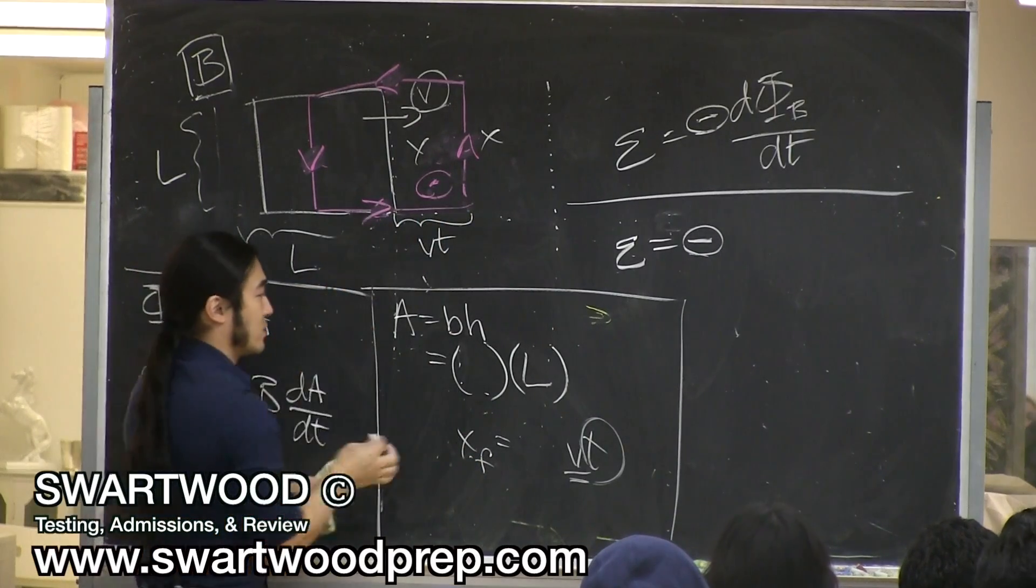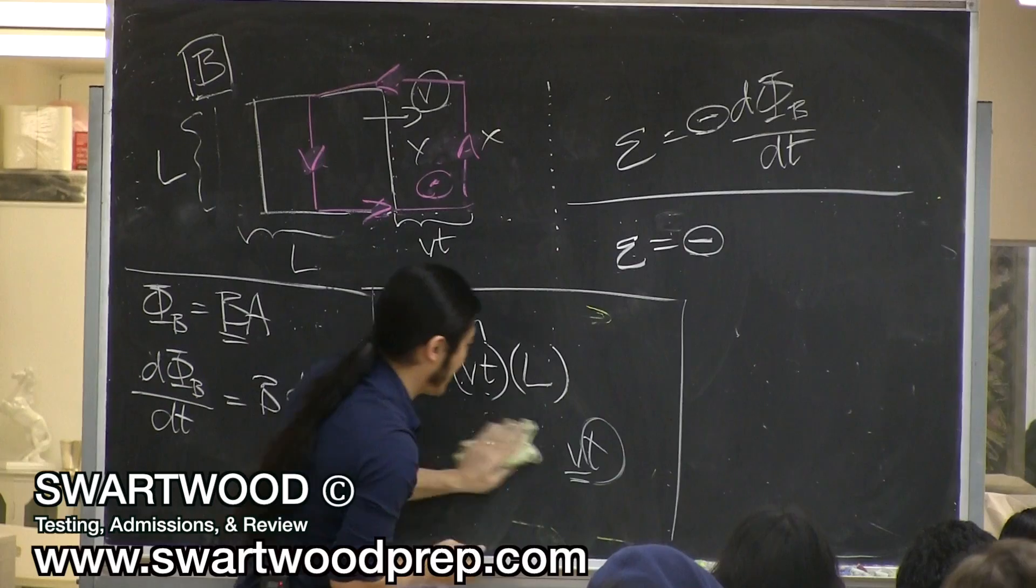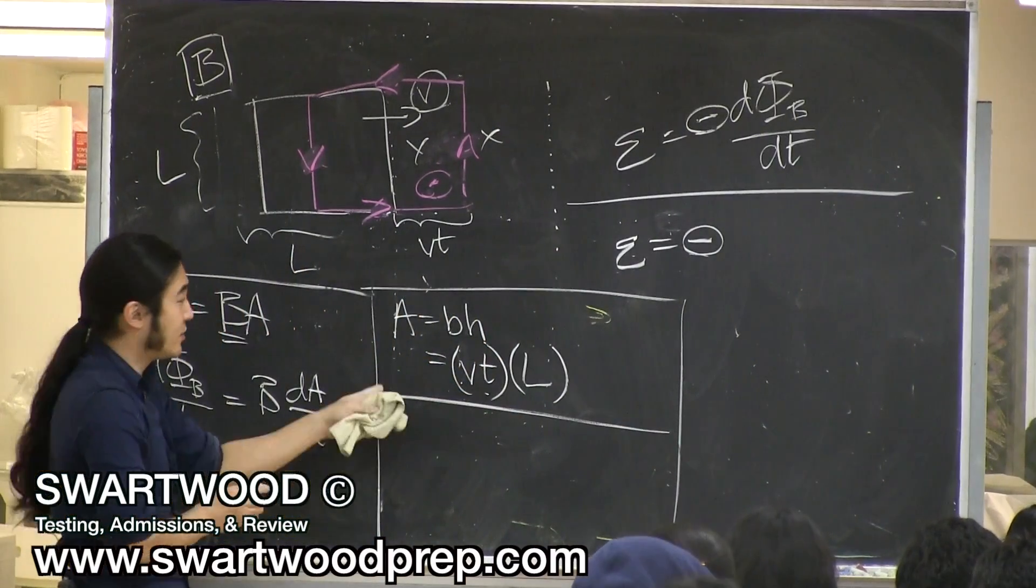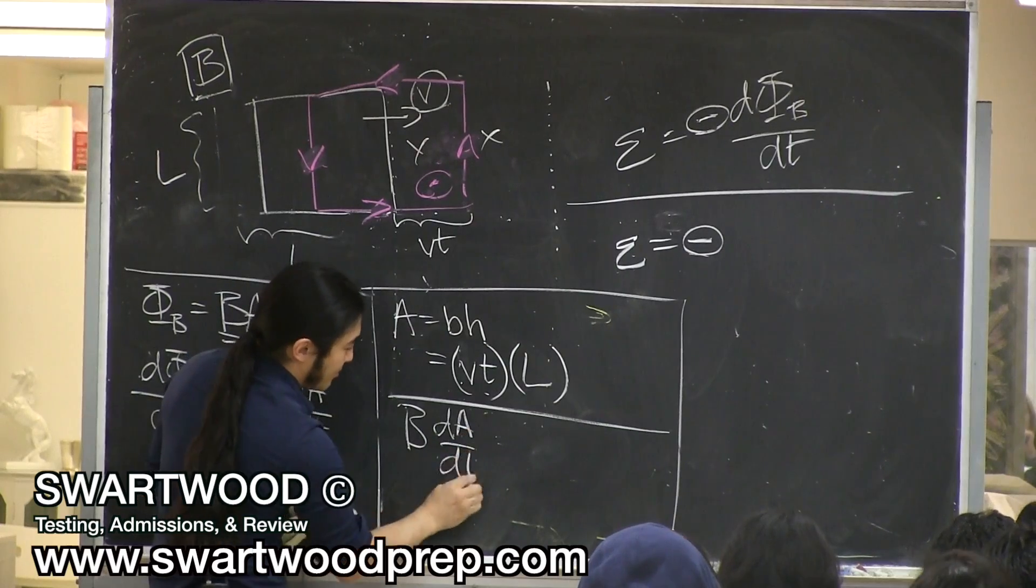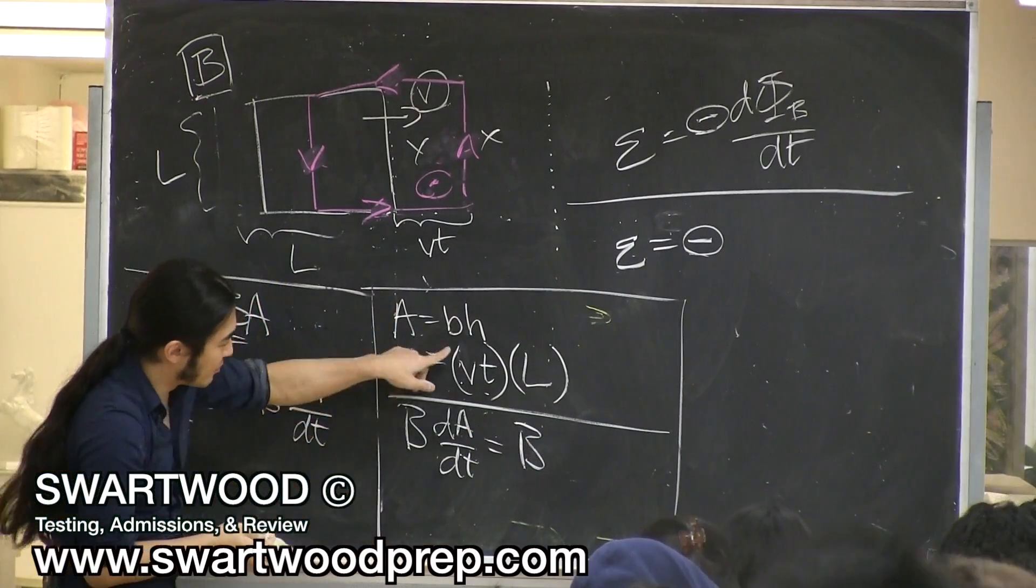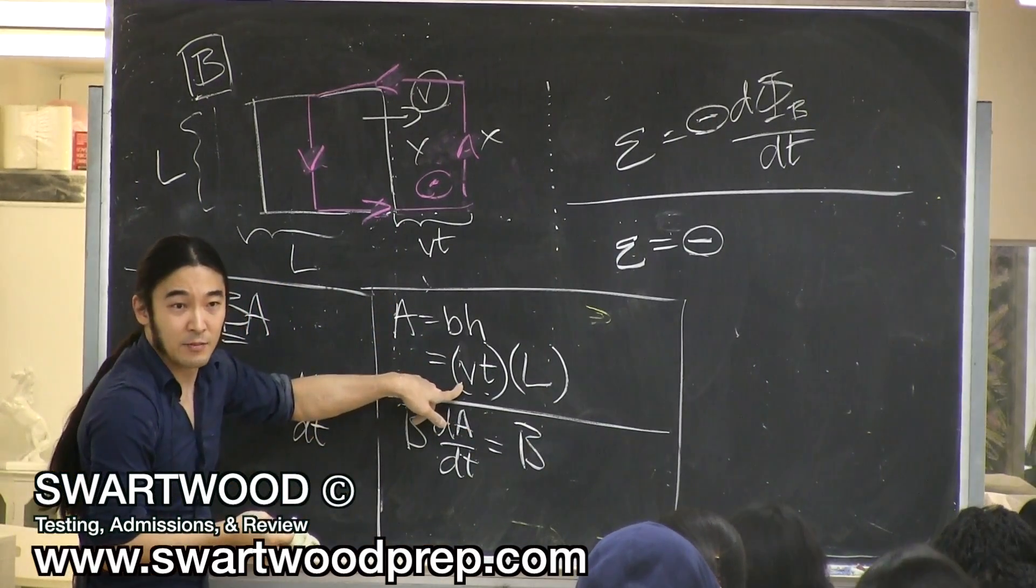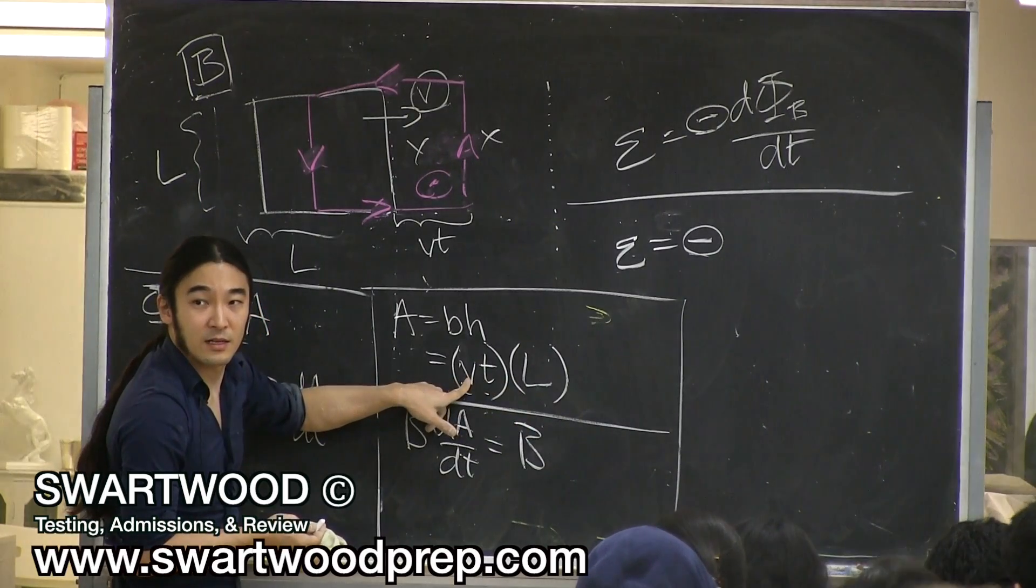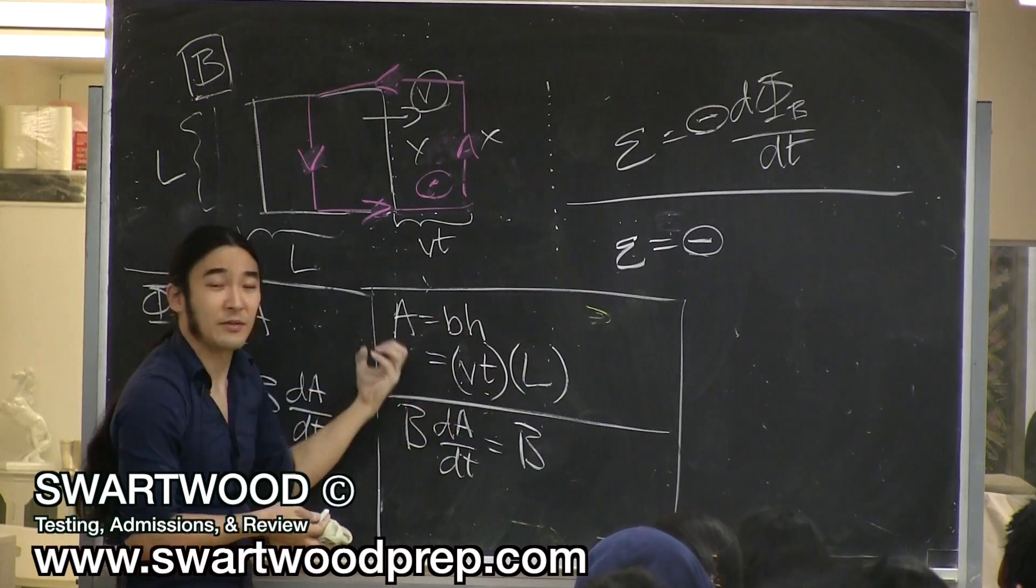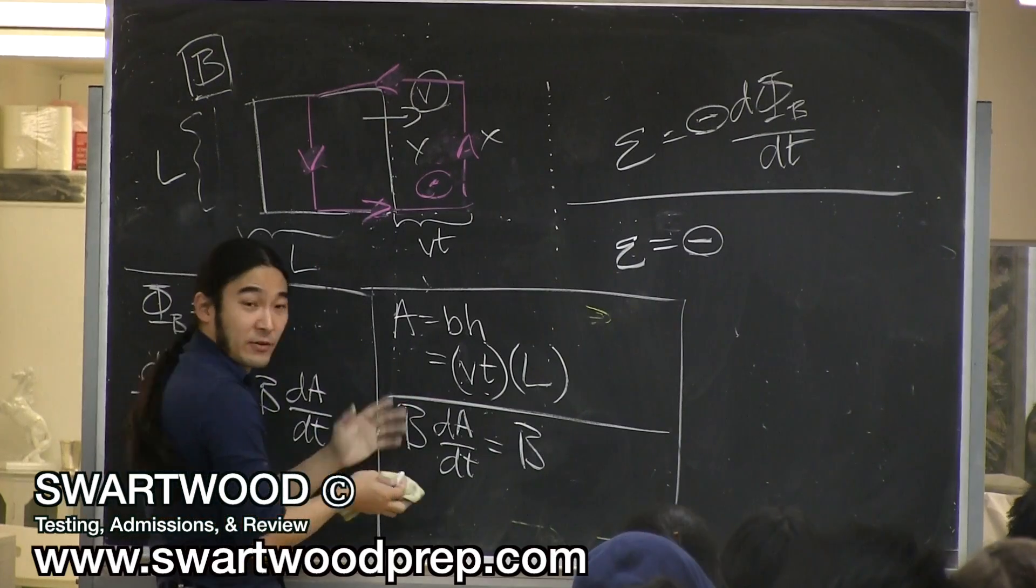So, Vt. Almost done. Now you tell me, how do you compute dA/dt? Bad flashback to math. Take the derivative of this guy with respect to time. But that means everybody else is a constant. So what happens to L and V? They just come out. They're just constants, right?